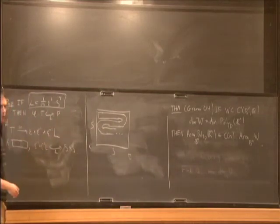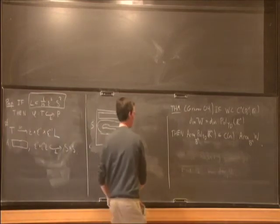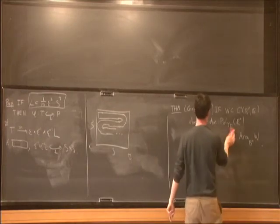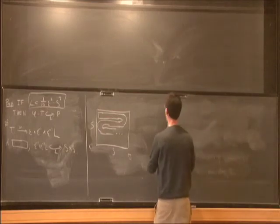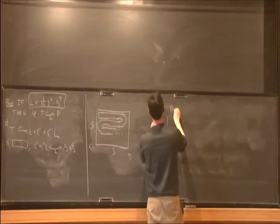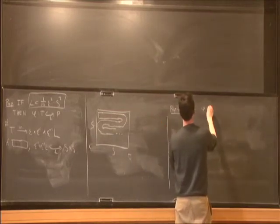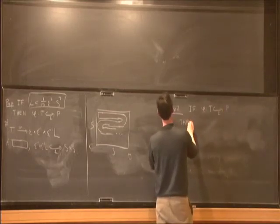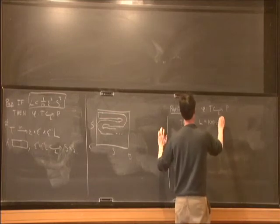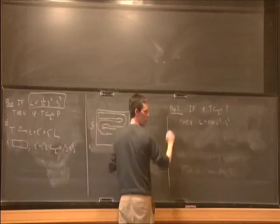That's a straightforward way of doing it. The problem is to understand whether we can do better with some more complicated twisty map. It turns out this is the best we can do.